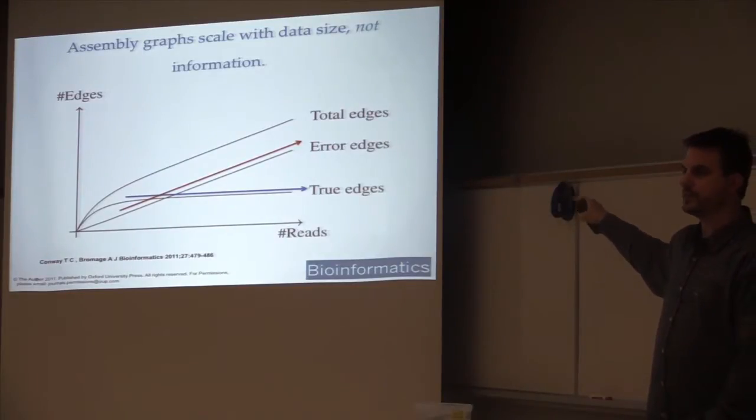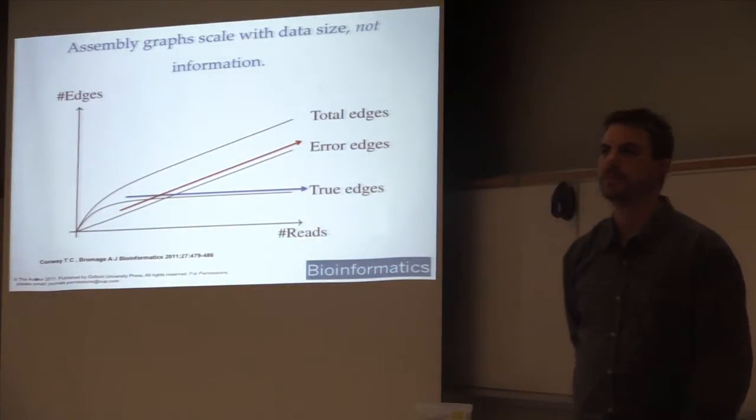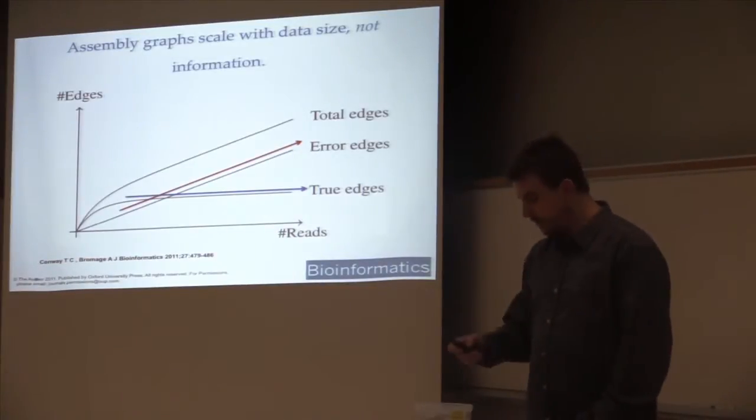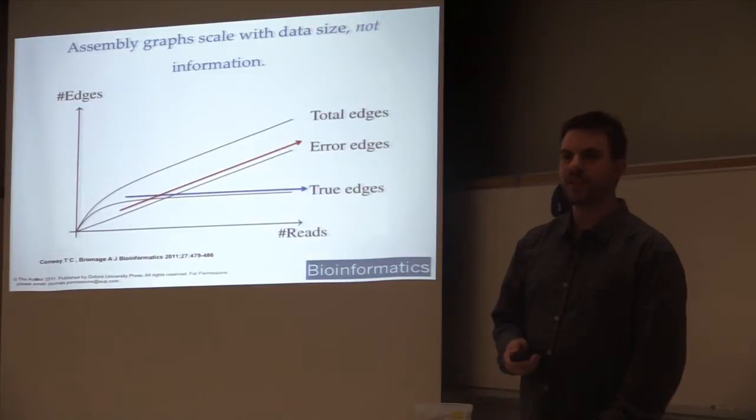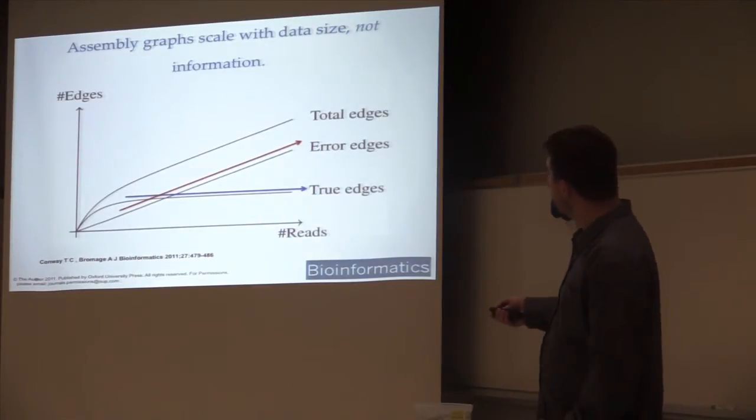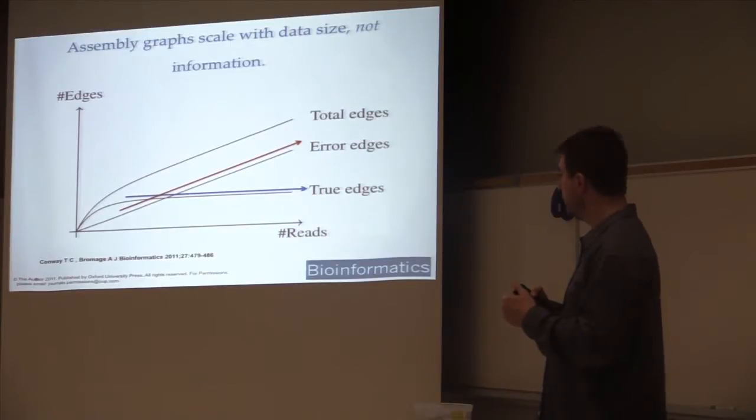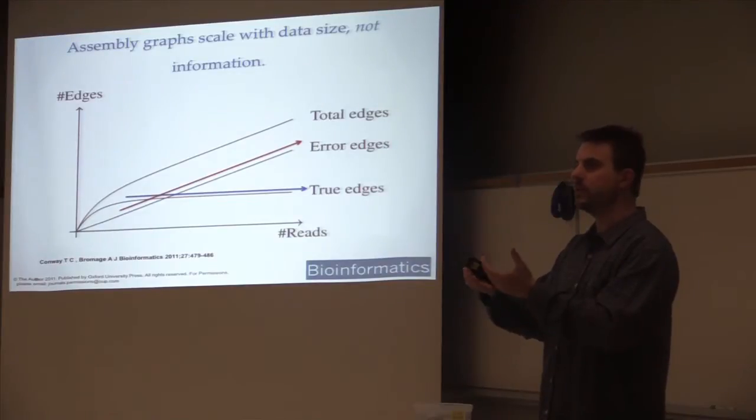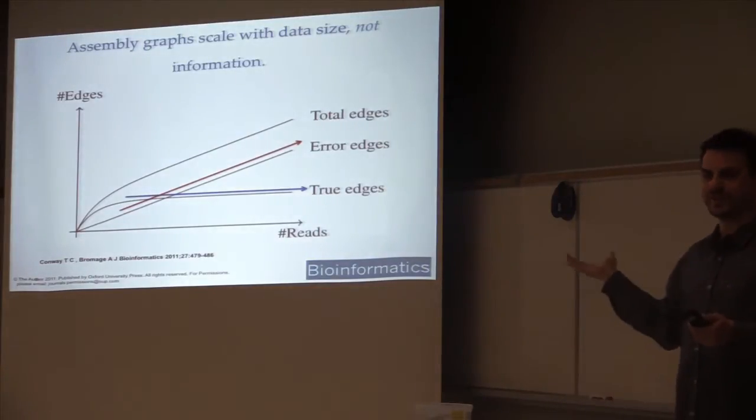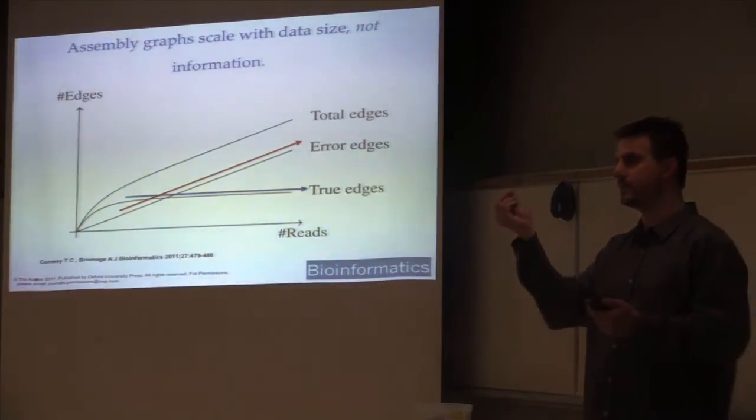This is why for RNA-seq and for metagenomes in particular, memory consumption of assemblers is such a problem. You need to sequence very deeply to see the rare things. In order to sequence deeply, you need lots of reads. And that ends up giving you a lot of total edges, most of which are error edges, even if you contain most of the true information.